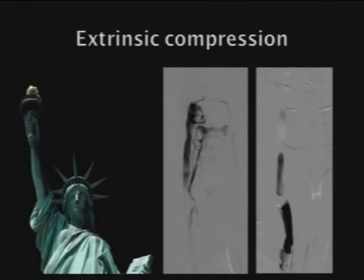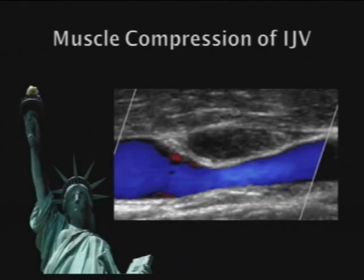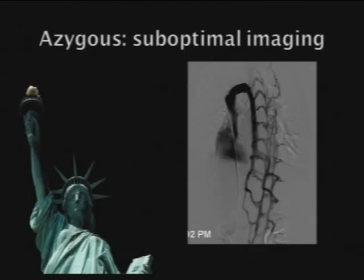In another case of extrinsic compression, the vein looked really abnormal with lots of collaterals going back towards the spine. Pulling the catheter back and doing a shorter injection revealed a big thumbprint in the jugular vein — a muscle impinging on it, identified on second ultrasound. Either a stent or release of that muscle would be effective for this stenosis. The azygous vein is really challenging — imaging that is too dense or not in profile makes it impossible to evaluate.